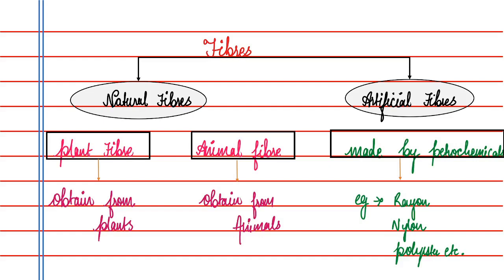First, we have to know how many fibers are used to make yarn, and from yarn we make wool and fabric. This fabric is very important in our life. Natural fiber falls into two categories: plant fiber and animal fiber.